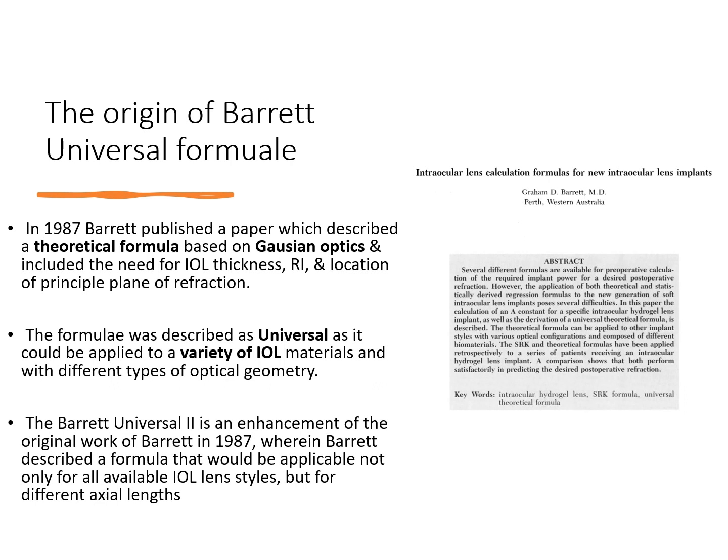The original work of Barrett was actually first published in the JCRS in 1987, and that forms the backbone of what we know today as the Barrett Universal-2 formula. What we understand as a new-age formula — some describe this as the fifth-generation formula, some say next-generation formulas — the genesis of this formula actually lies in the work published by Barrett in 1987.